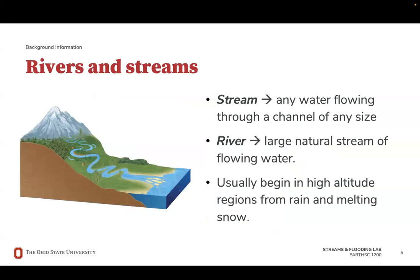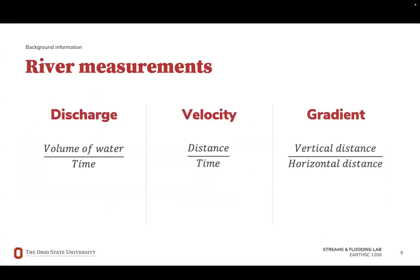Rivers and streams have been shaping our world for millions of years. To understand how streams affect Earth, we must be able to recognize stream characteristics and their features. A stream is defined as any water flowing through a channel of any size. Streams have created famous topographical features such as the Grand Canyon in Arizona and the Mississippi River Delta south of New Orleans, Louisiana, through the processes of erosion and deposition. One type of stream is known as a meandering stream, characterized by its winding, sinuous paths, which contrasts with the more direct routes of straight or braided streams. Three key measurements that Earth scientists use to describe rivers and streams are discharge, velocity, and gradient.